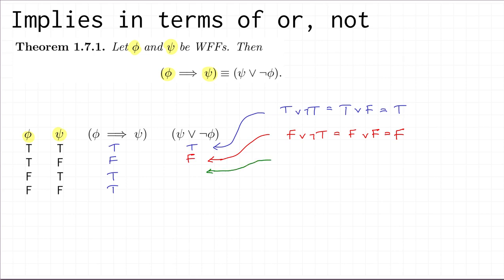On the line below, phi is false and psi is true. So we have: true OR NOT false, which is true OR true, so that's true. And finally for the last line, where they're both false: false OR NOT false, which is false OR true, which is true.